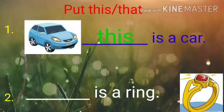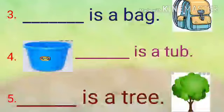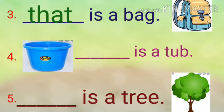In sentence number two, it is written: 'Dash is a ring,' and a picture of a ring is shown. Students, you can see the picture of the ring is far away from the dash, so for far objects we will use 'that'. That is a ring. Number three: 'Dash is a bag,' and a picture of a bag is drawn. The picture of the bag is far away from the dash, so we will use 'that'. That is a bag.